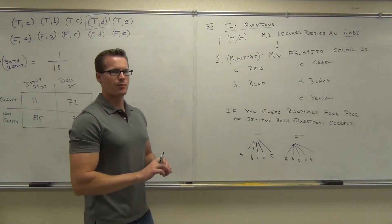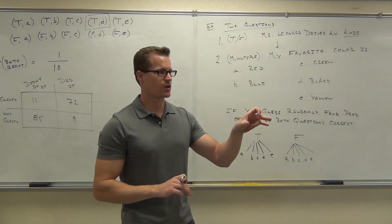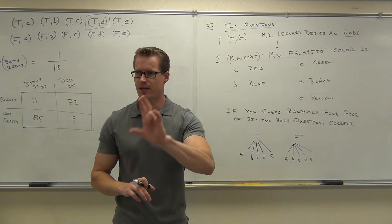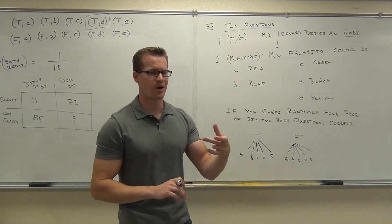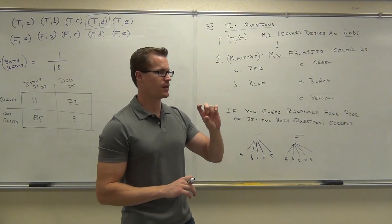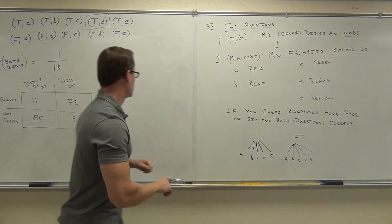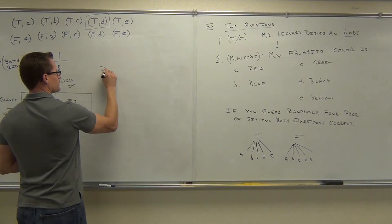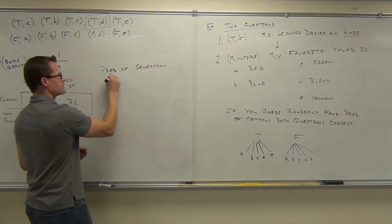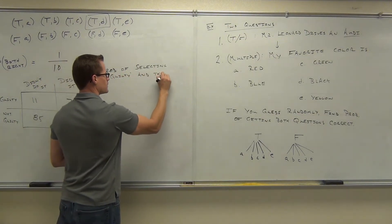Here's what I'd like to do. I want to find the probability of selecting someone who is guilty and then selecting someone who is not guilty — without replacement, meaning I don't put that person back in the mix. So how many people am I selecting? Two. Notice how we have two trials now — one trial is happening and then another one is happening.